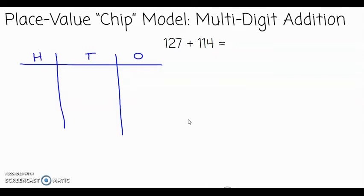I am now ready to represent the two numbers I am adding on my place value chart. I will begin with 127. This number has 100, two tens, and seven ones.